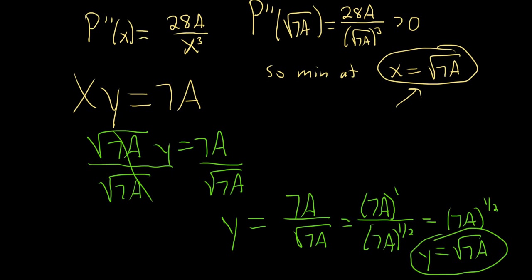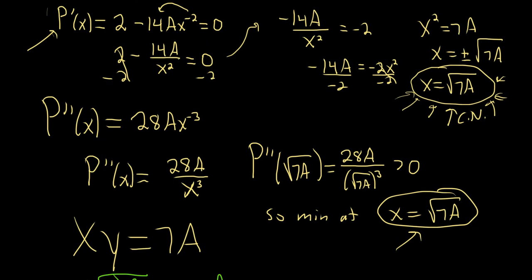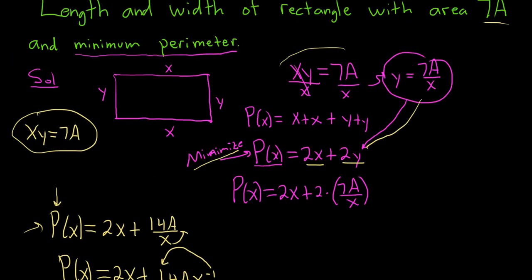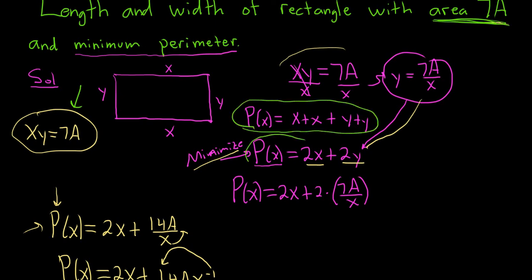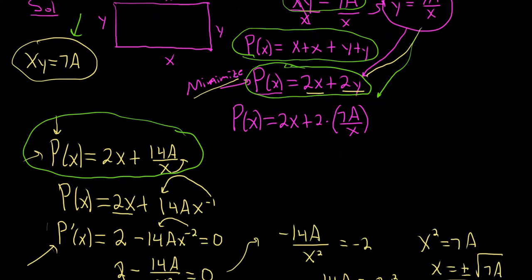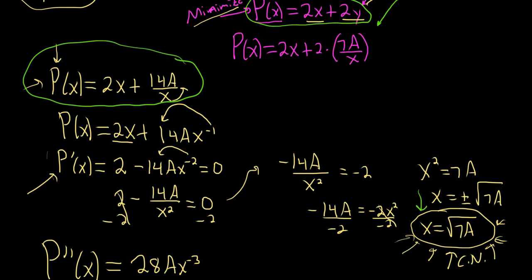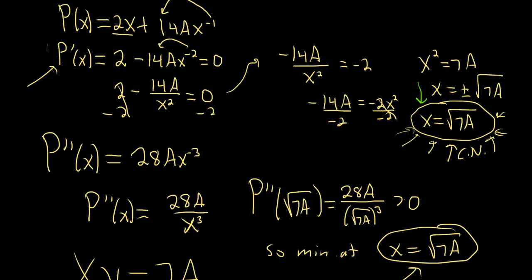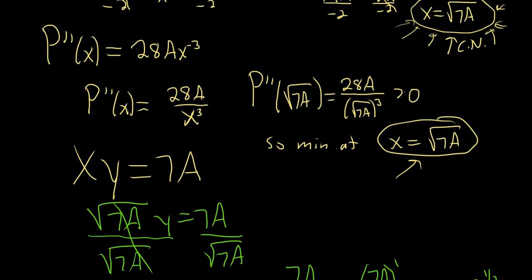So x and y are the same: both equal square root of 7a, which means we get a square. A square gives the minimum perimeter. The full process: draw the rectangle, write xy = 7a, write the perimeter formula, substitute to get a single-variable function, take the derivative and set it to zero, plug the critical number into the second derivative to confirm a minimum, and then solve for the other variable.